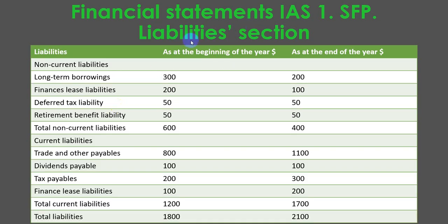Here is the liabilities section of the statement of financial position. The non-current liabilities include long-term borrowings, finance lease liabilities, deferred tax liabilities, and retirement benefit liabilities, with a total calculated. The current liabilities section contains trade and other payables, dividends payable, tax payable, and finance lease liabilities, with both total current liabilities and total liabilities calculated.